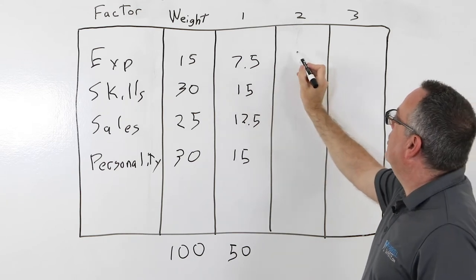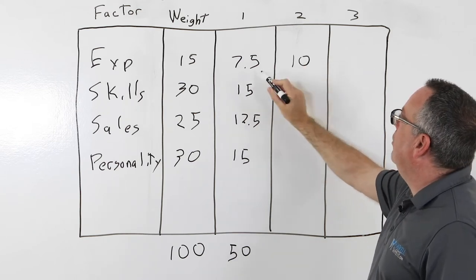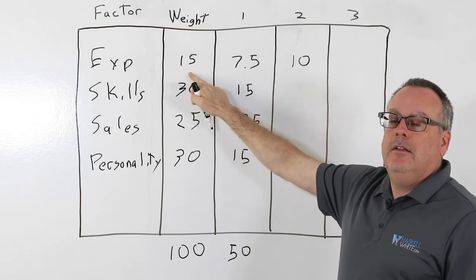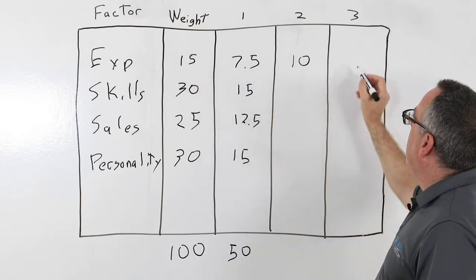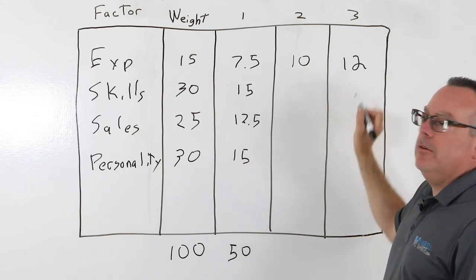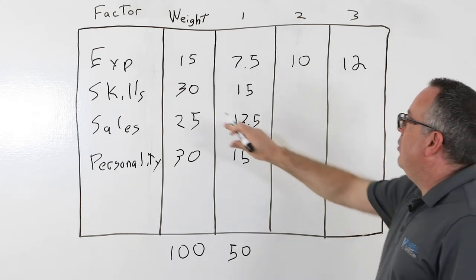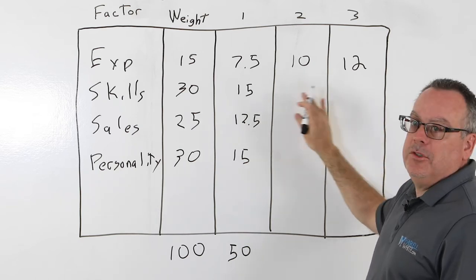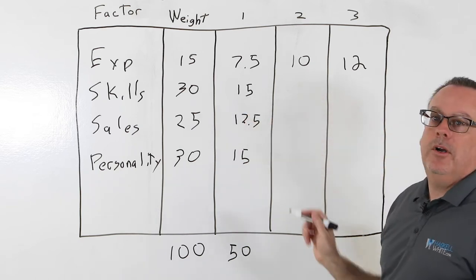So an example, maybe the first candidate number two scored a little higher, so you'd rank that at 10, just make sure it doesn't exceed the total of the weight factor, and then maybe candidate three looks a little better, so we'll score them at a 12. And you'll go through each factor and evaluate the options and the alternatives against your benchmark.